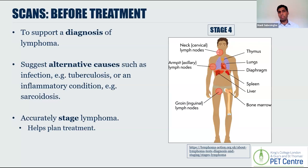Importantly, the reason for staging is to help plan treatment, because for different stages of disease we have different treatment strategies. For example, for Hodgkin's lymphoma, if you had stage one disease the normal treatment would be two cycles of chemotherapy followed by radiotherapy, whilst stage four Hodgkin's lymphoma would require six cycles of chemotherapy. Staging also helps us give an idea regarding outlook — it helps doctors give those with lymphoma an idea about prognosis.